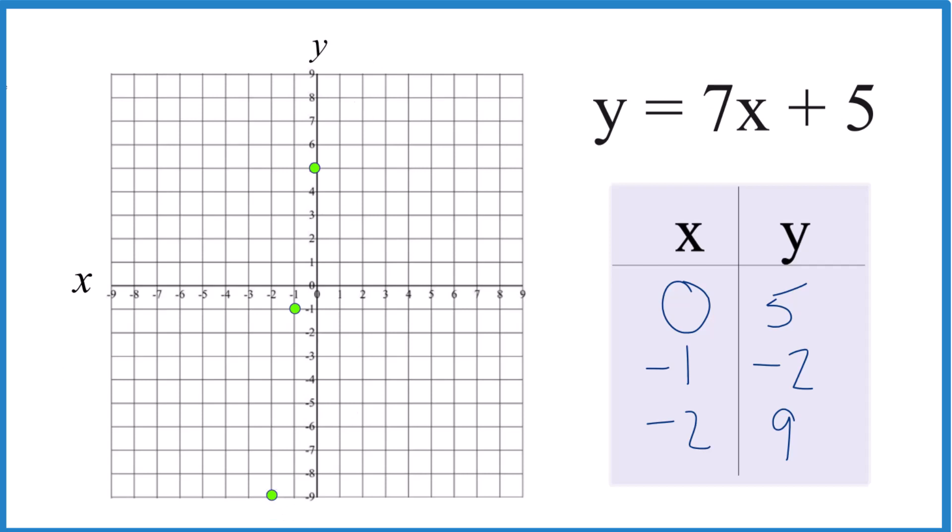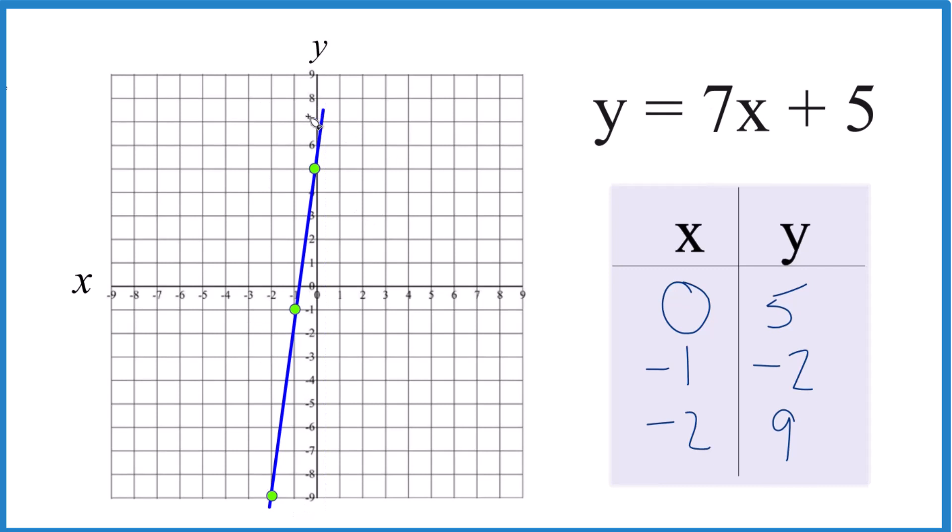You see the line? Let's put a line through it. Now we can put arrows to show that this goes to infinity. We have the graph for y equals 7x plus 5.